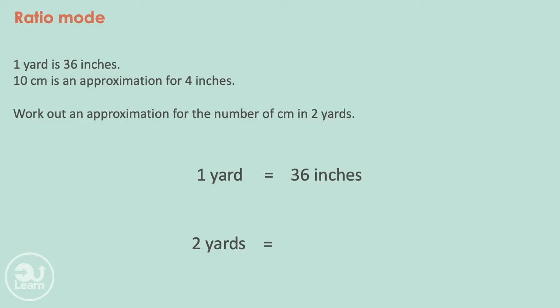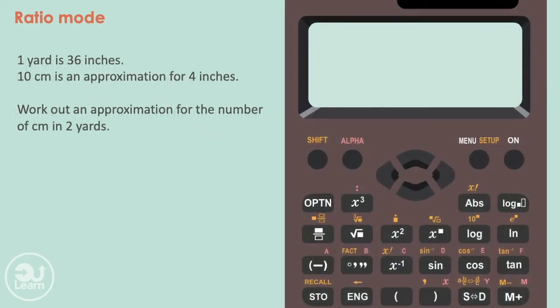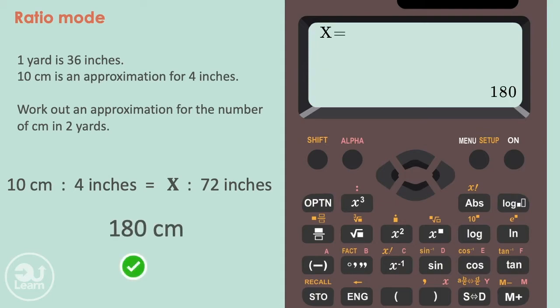We don't necessarily need to use our calculators for this part, as we would just be doubling 36 to give us 72. However, if you did, you would get to the same answer. Now we know how many inches there are in two yards. We can lay out our ratios like so. Typing these values into our calculator, we get the final answer of 180 centimeters.